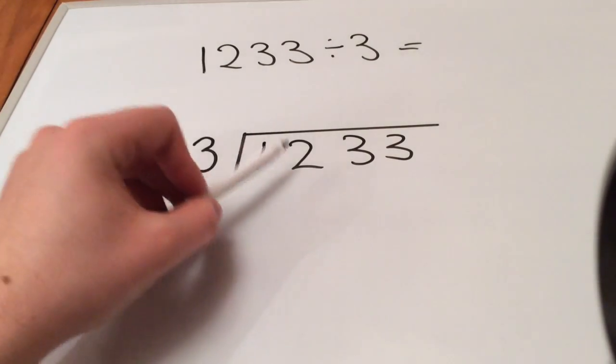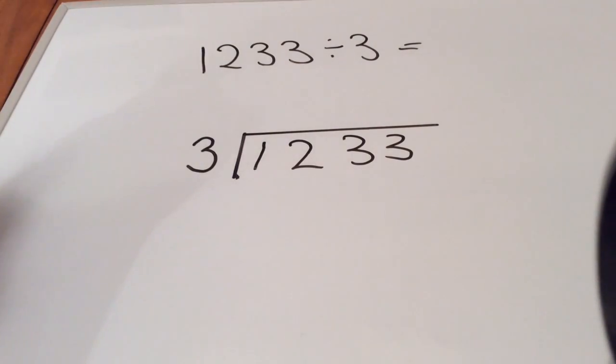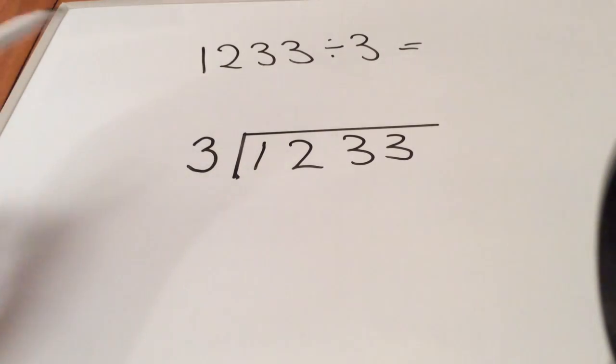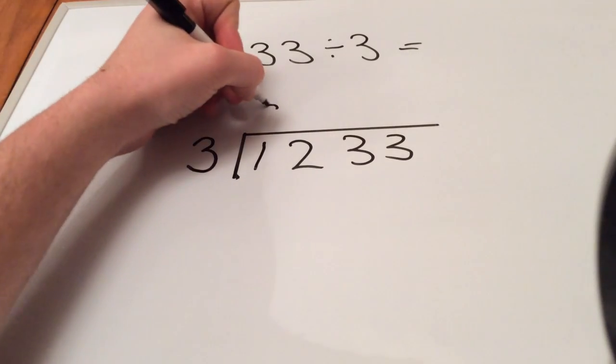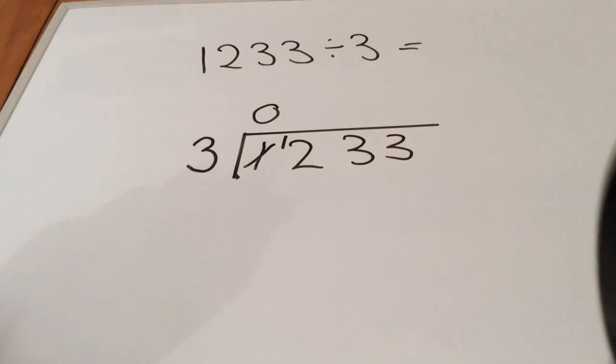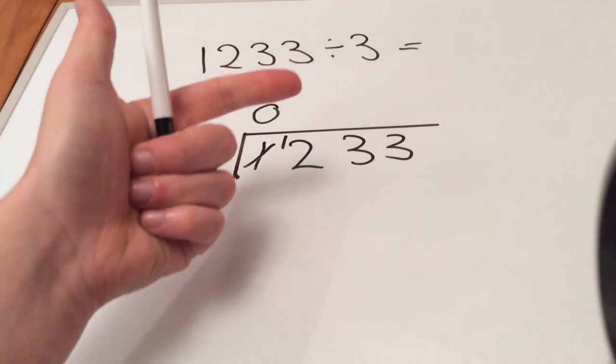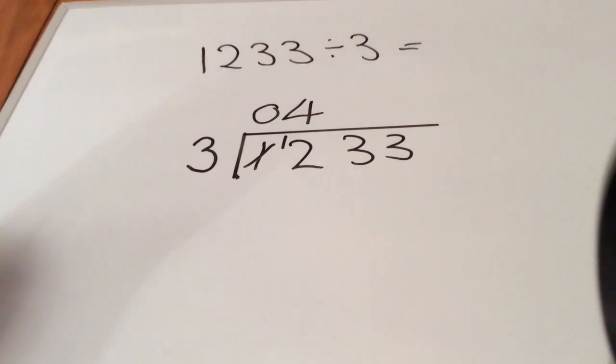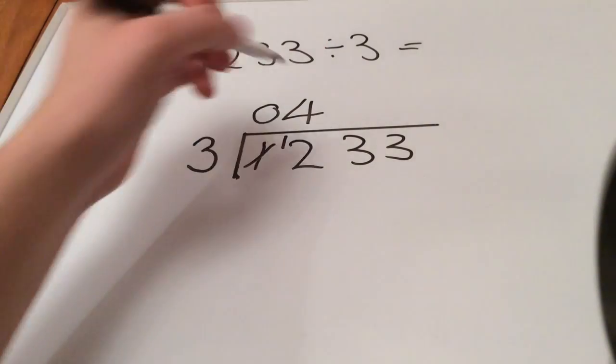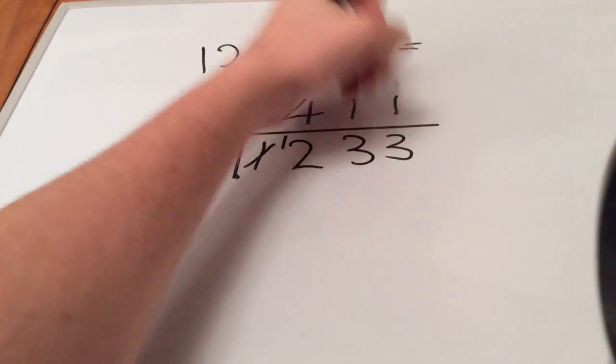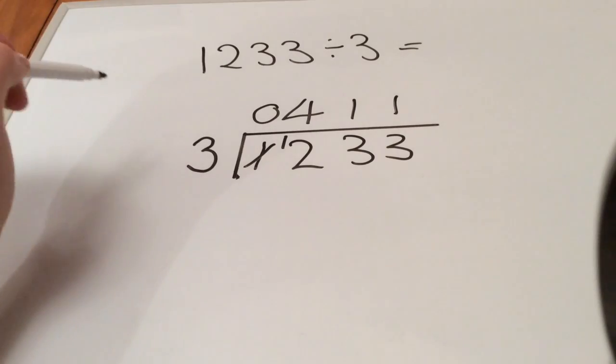What we need to do is look at each number here and see how many times 3 goes into it. How many times does 3 go into 1? Well it doesn't, so there's 0 there and we carry the 1 over to become 12. How many times does 3 go into 12? 3, 6, 9, 12 - 4 times, so 4. How many times does 3 go into 3? 1. And how many times does 3 go into 3 again? 1. So 1233 divided by 3 is 411.